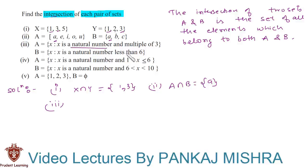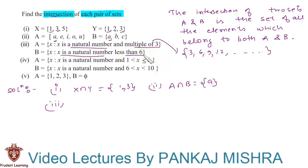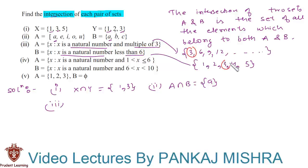In the third section, A is the set of x such that x is a natural number and a multiple of 3 — so elements are 3, 6, 9, 12, and so on (an infinite set). B is the set of x such that x is a natural number less than 6, which contains elements 1, 2, 3, 4, and 5. The only element common to both sets is 3, hence A intersection B is a set containing element 3.